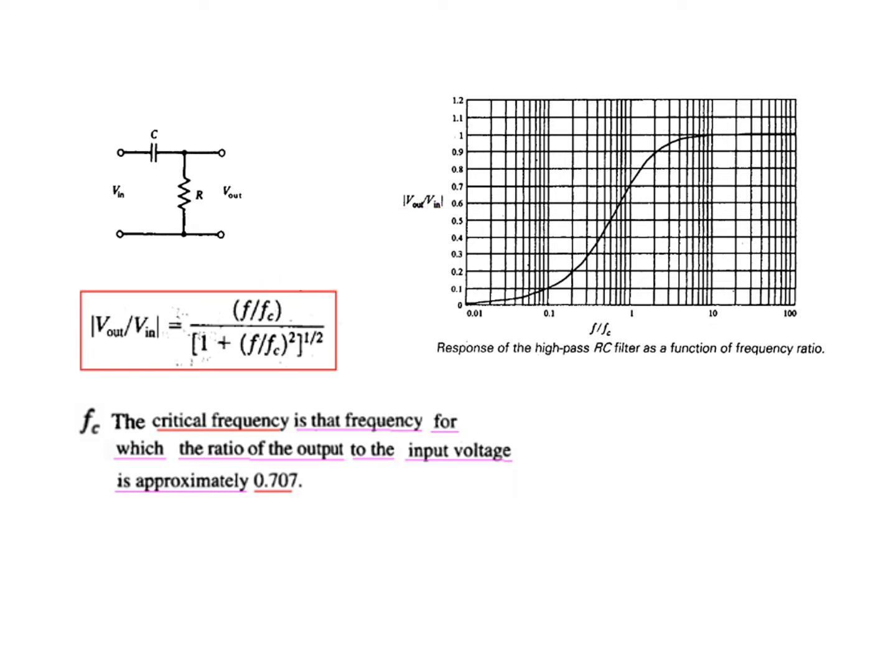The formula that is used for calculating the Vout/Vin ratio is this. On the horizontal axis we have f over fc, and the vertical axis is Vout over Vin.